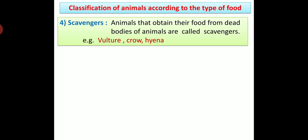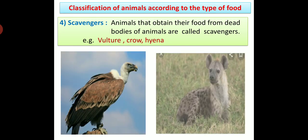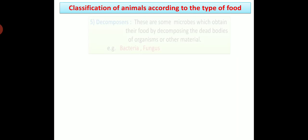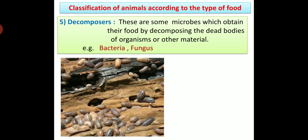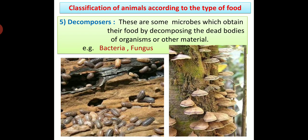Scavengers are animals that obtain their food from dead bodies of animals. For example, vulture, crow, hyena, etc. Fifth: Decomposers - these are microbes which obtain their food by decomposing the dead bodies of organisms or other material. For example, bacteria and fungus are decomposers.